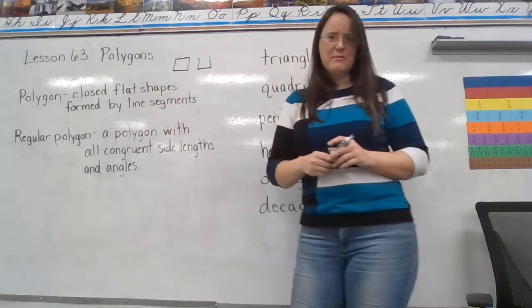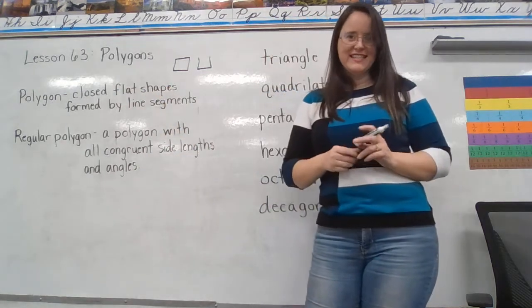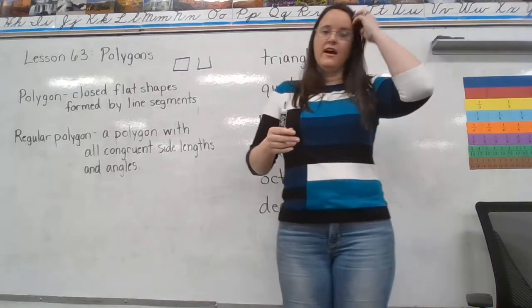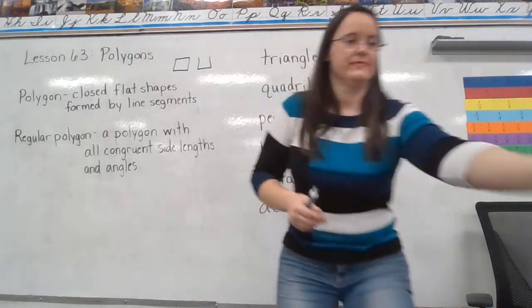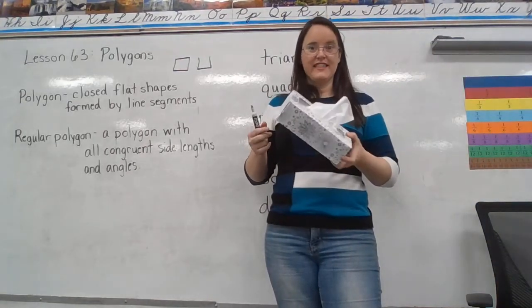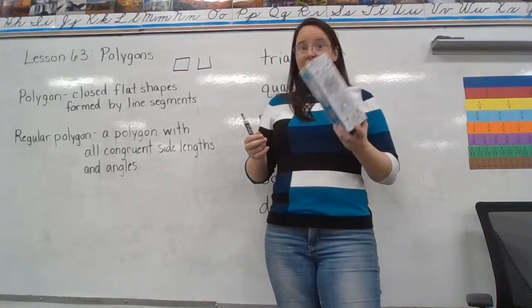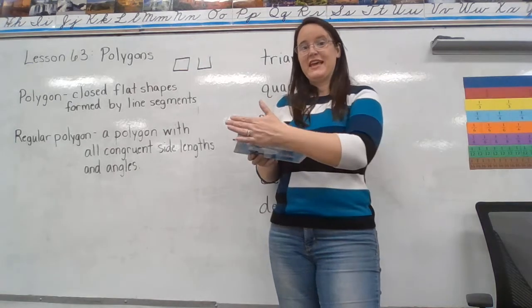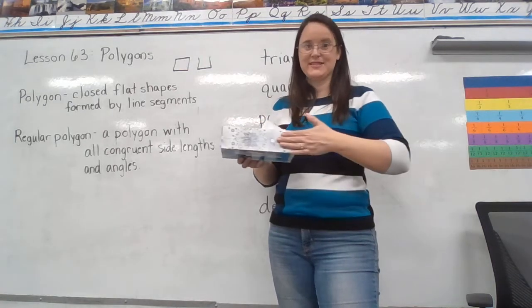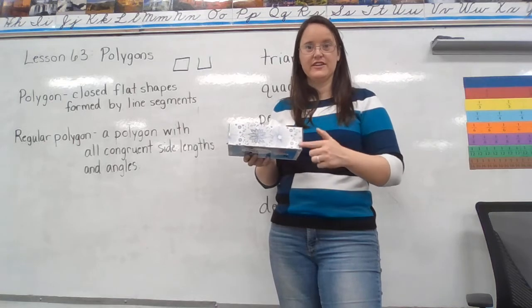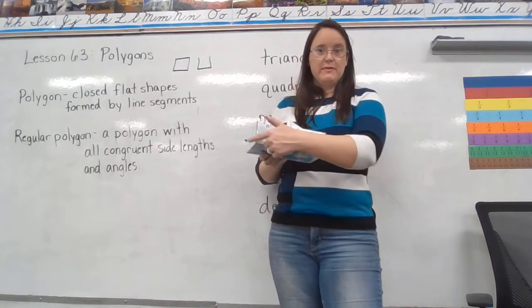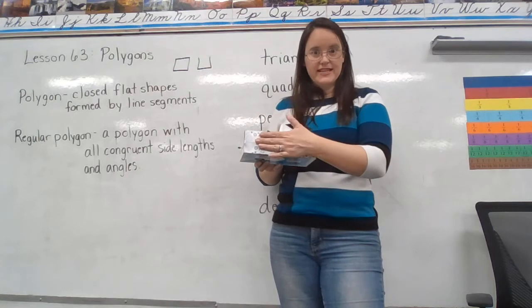I think you guys could tell me what flat is, right? It's not a three-dimensional object — it's not this box of tissues, because that's not flat. Now, this box of tissues is made up of polygons, because this one particular side here is flat. This would be a polygon called a rectangle.